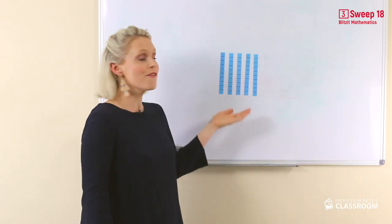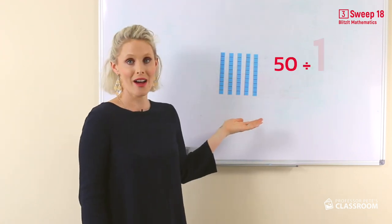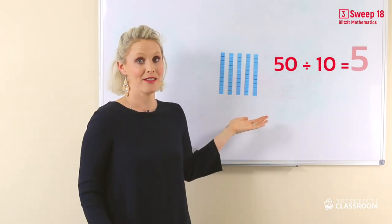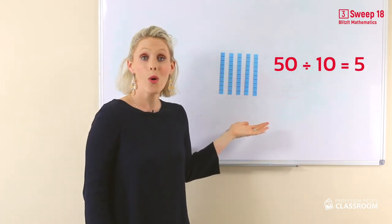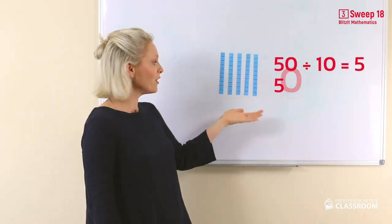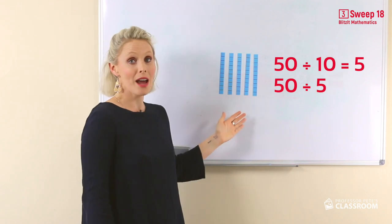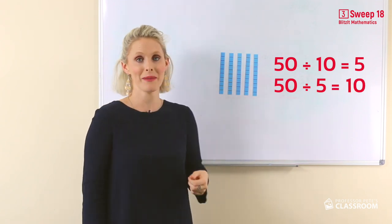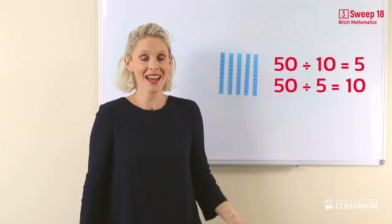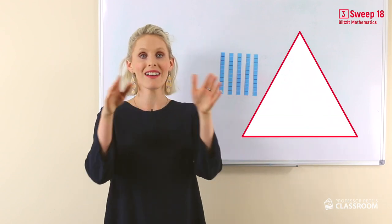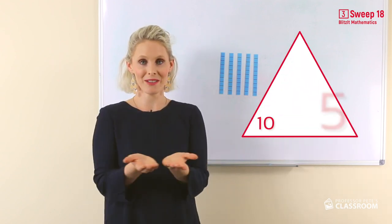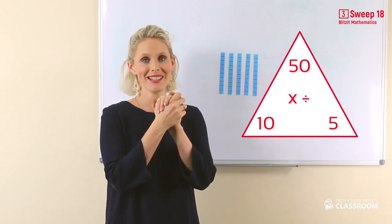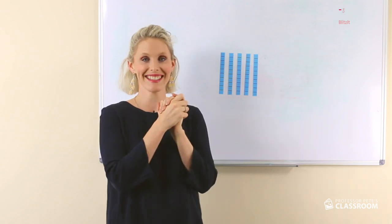So when you have 50 divided by 10, it has to equal 5. Or if you have 50 divided by 5, it has to be 10. Remember your number fact families and the numbers that go together. You've got this!